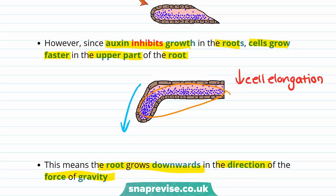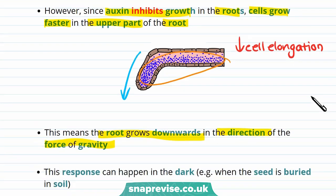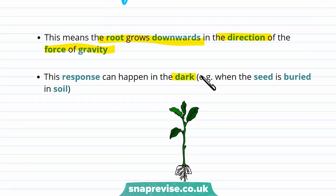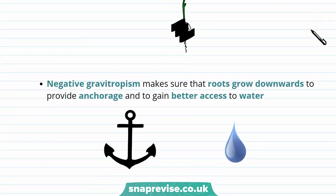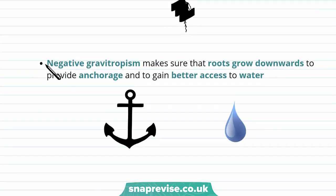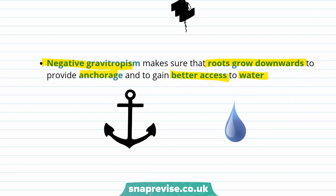One interesting fact about gravitropism is that it can even happen in the dark — for example, when a seed is buried in soil. Positive gravitropism is really useful as it makes sure that the roots grow downwards to provide anchorage and to gain better access to water. This helps keep the plant structure stable and allows it to get the water needed for photosynthesis.